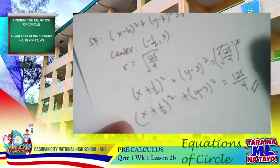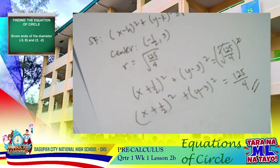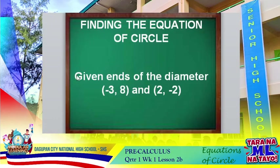This is now our equation for the given situation — the equation of the circle given the ends of the diameter.